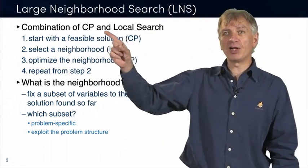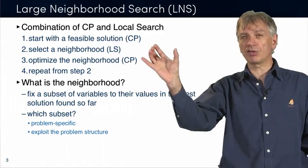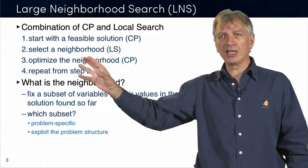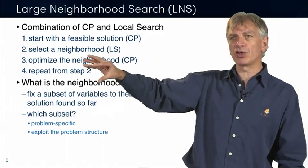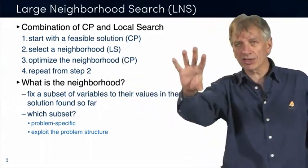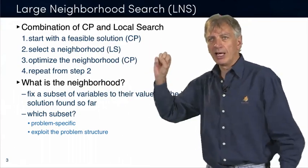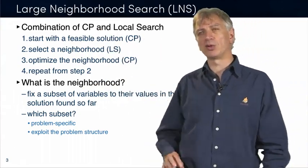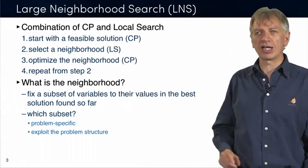So in a sense, you find a solution, fix some of the variables, let the others free, and find a better value for these other variables, such that you improve the quality of the solution you have found so far. And then repeat. Find another set of variables that you fix, and re-optimize that particular neighborhood. And you iterate these two steps.